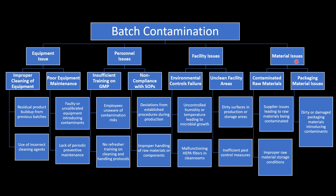Material issues can be subdivided into contaminated raw materials or packaging material issues. Contaminated raw materials could be due to a supplier issue leading to raw materials being contaminated, or improper raw material storage conditions. Packaging material issues may be due to dirty or damaged packaging materials introducing contaminants. In this way, you can apply fault tree analysis in your investigation to identify the root cause of your problem statement.